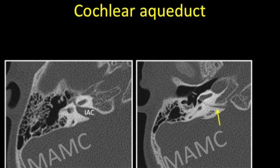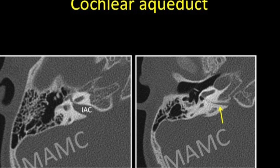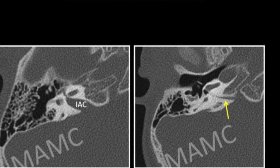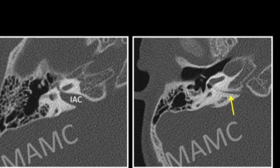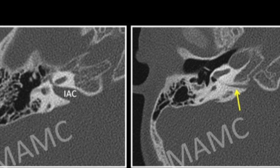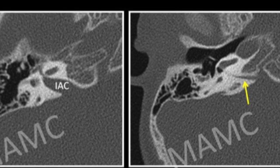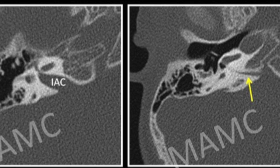The cochlear aqueduct is a narrow channel that contains perilymph and loose connective tissue, lying roughly parallel and slightly inferior to the IAC. It is a potential conduit between the posterior fossa and the inner ear, and its narrow diameter buffers the inner ear from wide pressure variations that can occur within the posterior fossa subarachnoid space.